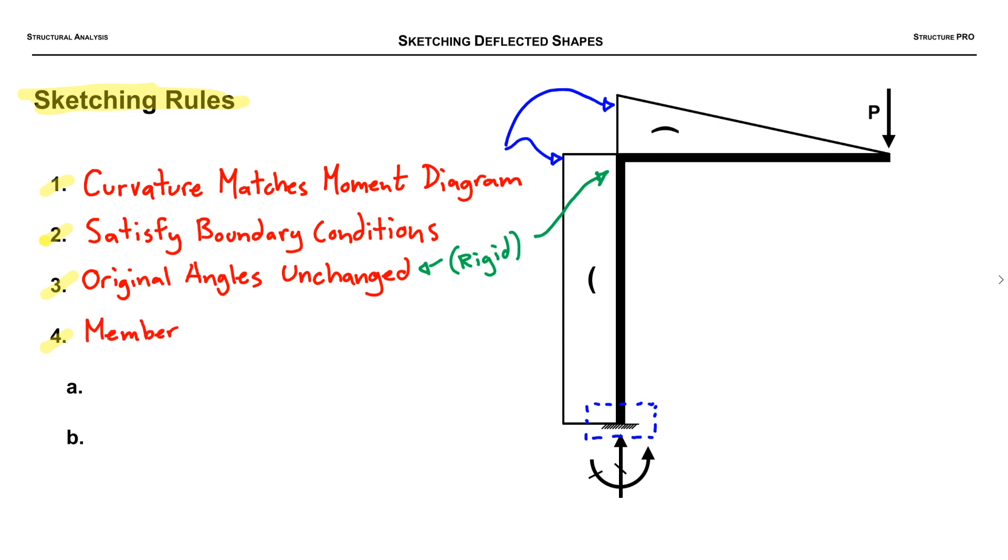The last rule here is perhaps the trickiest for folks to grasp sometimes. The member lengths must not change. They must remain unchanged. That means that horizontal members like beams, the horizontal projection must remain the same and vertical members like columns, the vertical projection must remain the same as the original length.